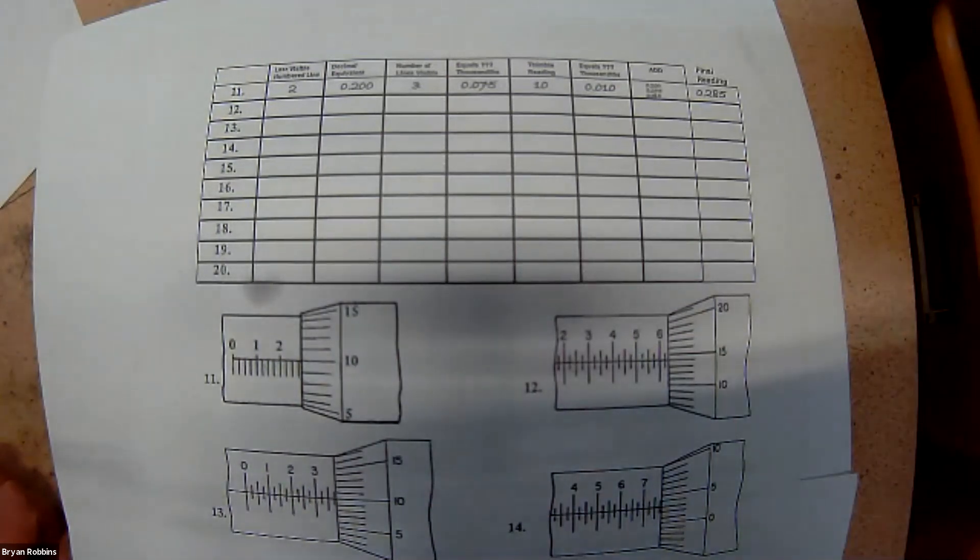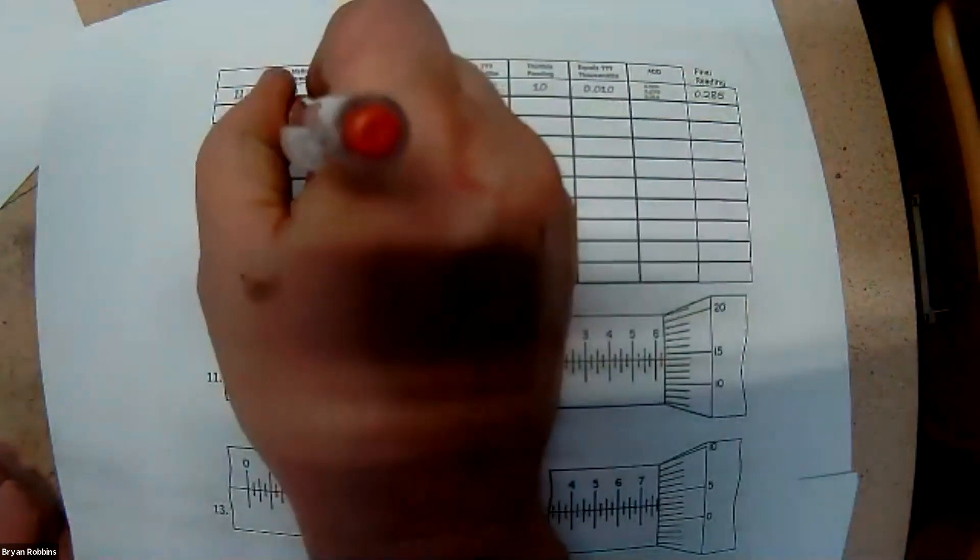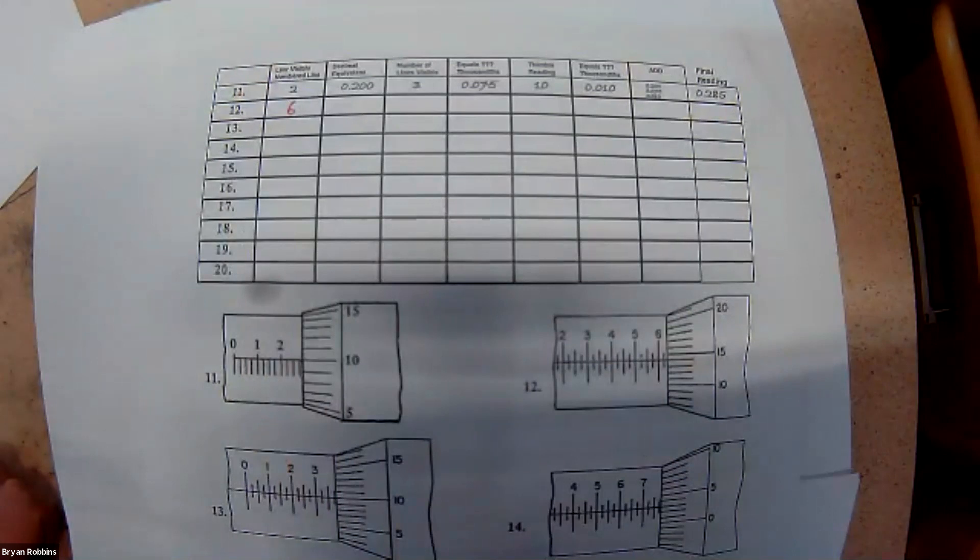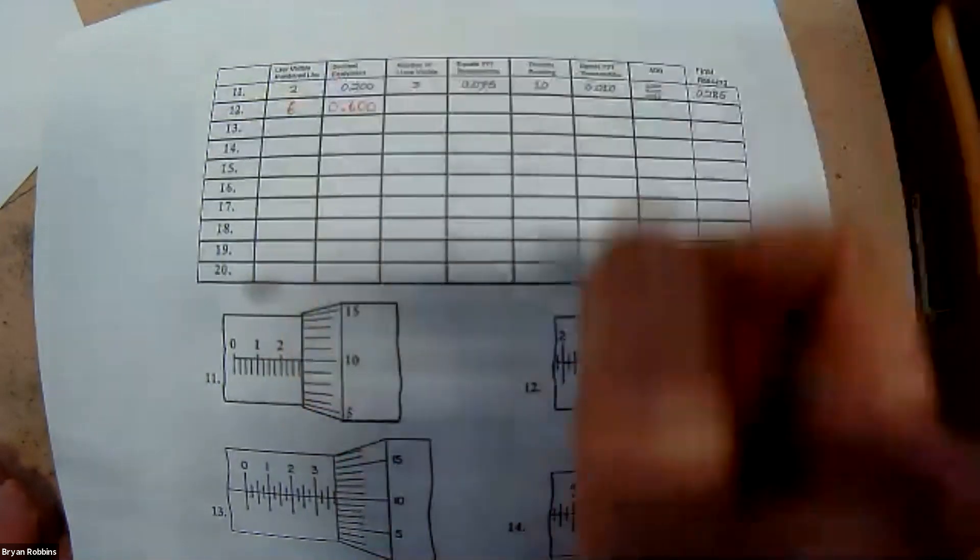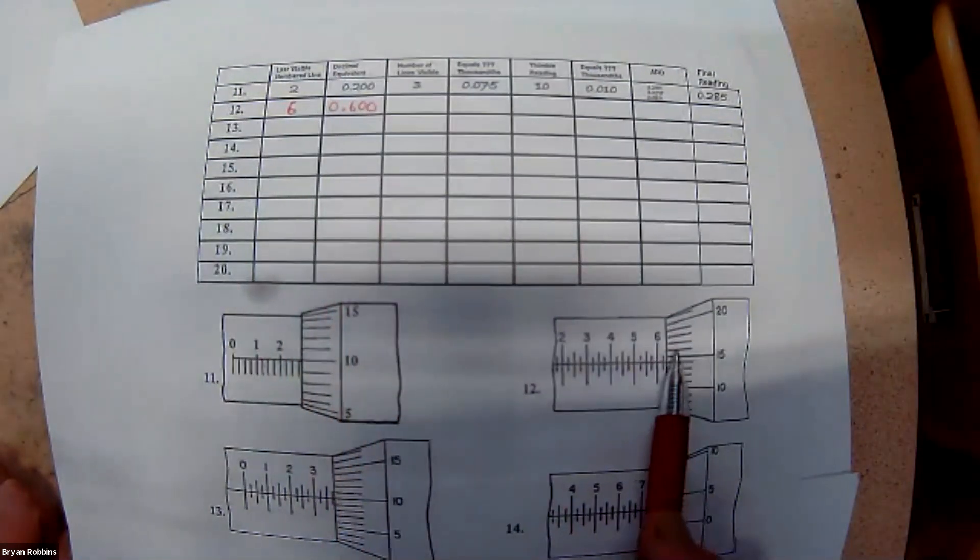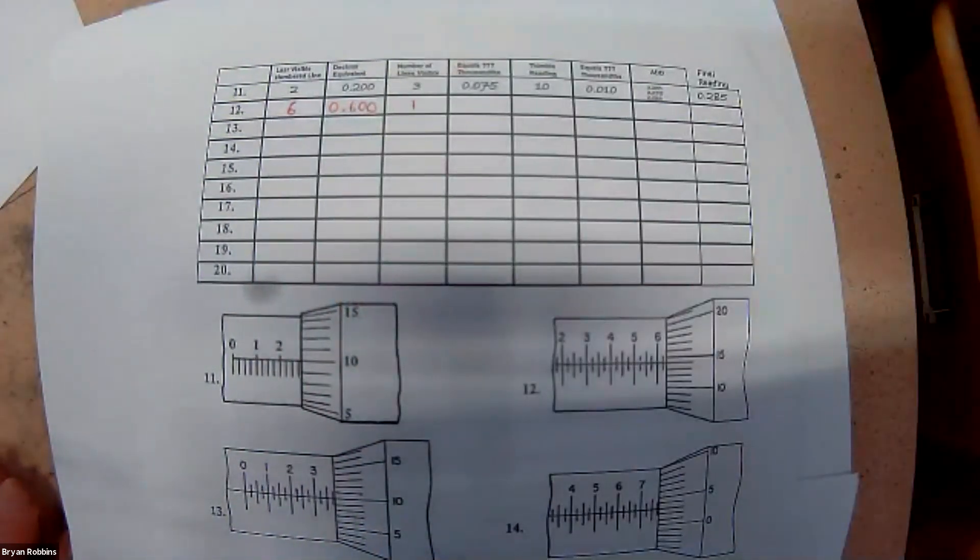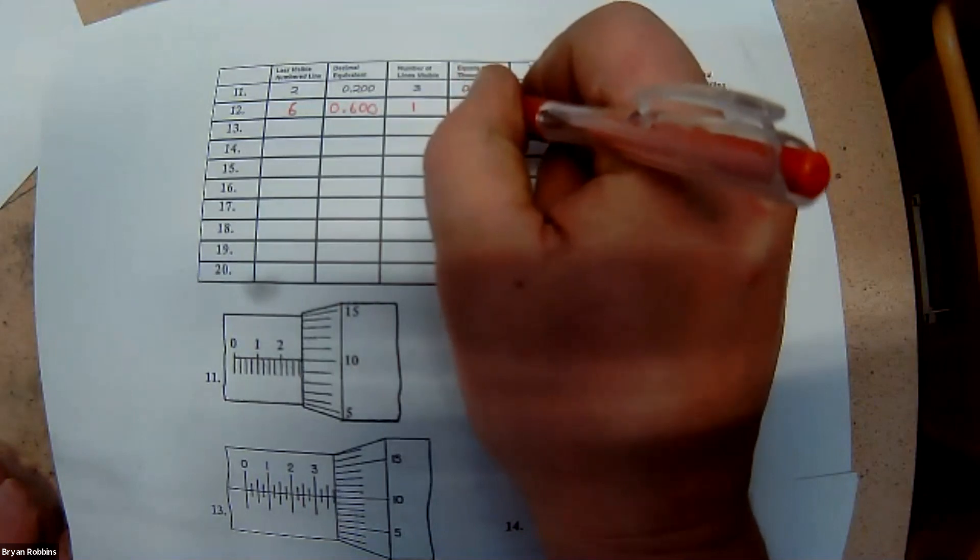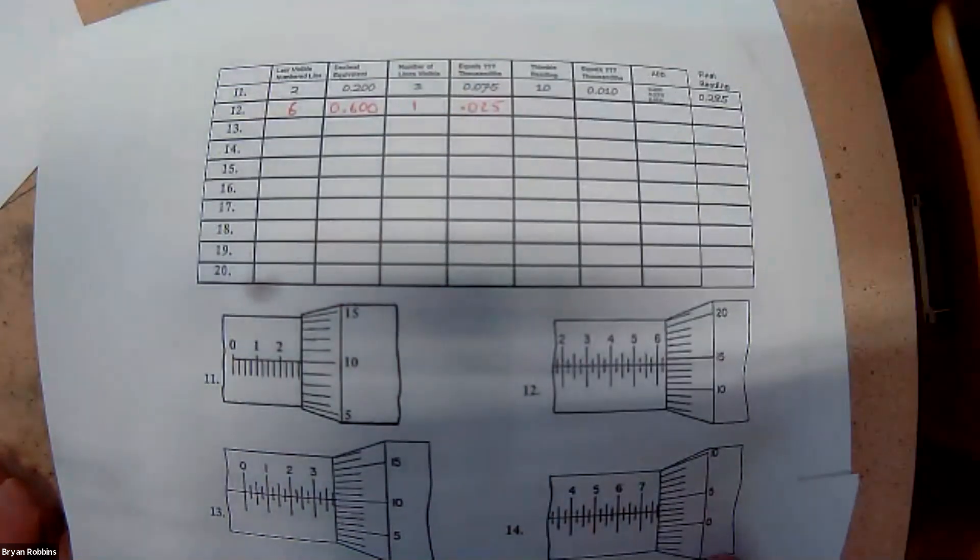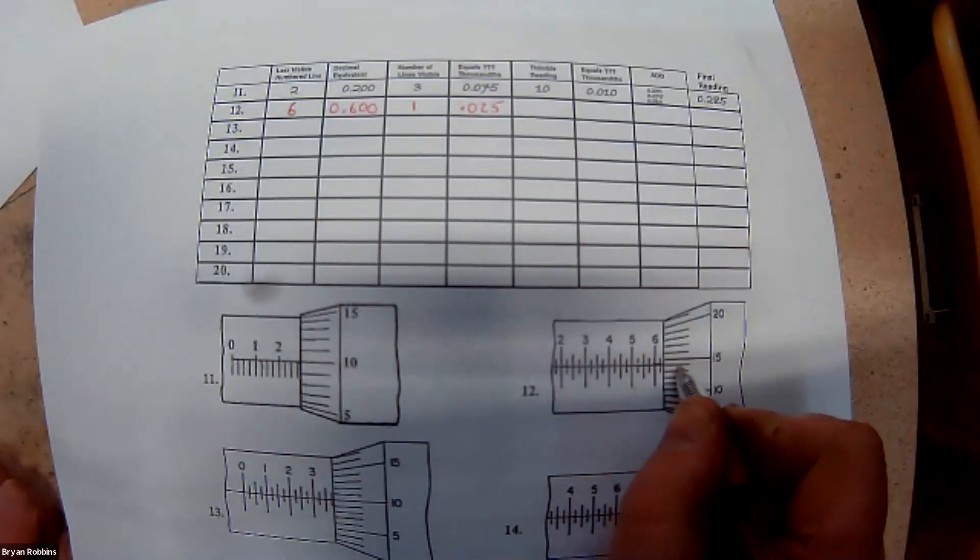Let's take a look at the next one here, number 12 on our paper. So, we've got a reading here of the last visible numbered line is a six. So, we'll write six up here. The decimal equivalent, 0.600. The number of lines visible after that six, there's just one of them. What does that equal in thousandths of an inch? That is .025. And then the thimble reading. Let's see. The thimble reading, the index line here, lines up with this mark, which is one mark before 15, which means that it's 14.